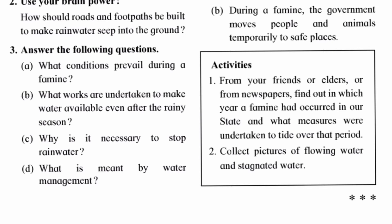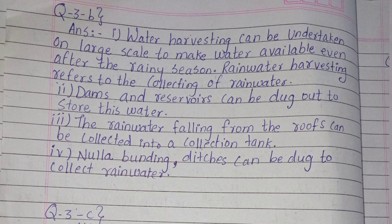Question three (b): What works are undertaken to make water available even after the rainy season? Answer: Water harvesting can be undertaken on a large scale. Rainwater harvesting refers to the collecting of rainwater. Dams and reservoirs can be dug out to store this water. Rainwater falling from the roofs can be collected into a collection tank. Nullahs and ditches can also be dug to collect rainwater.